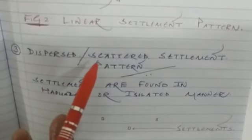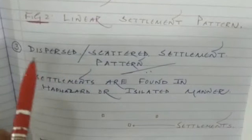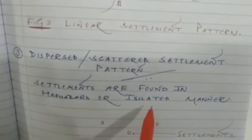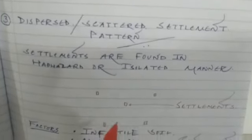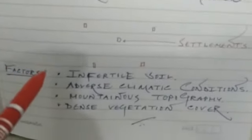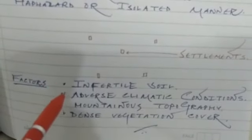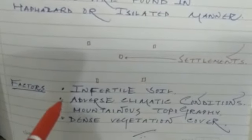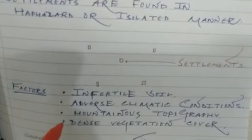The third type is the dispersed or scattered settlement pattern. As the word suggests, settlements are found in a haphazard or isolated manner. Looking at the diagram, settlements are not compact and not found in clusters — rather they are scattered here and there. The factors responsible for dispersed settlement patterns are: infertile soil, adverse climatic conditions, mountainous or hilly topography, and dense vegetation cover.